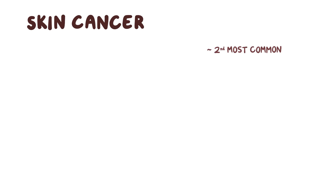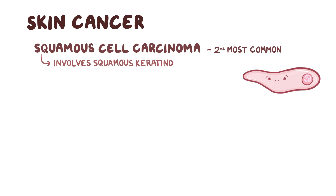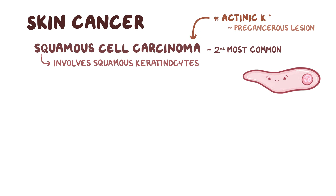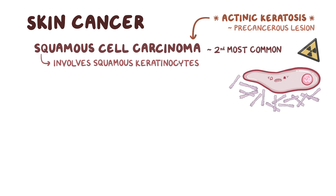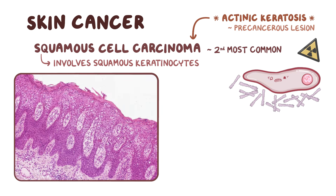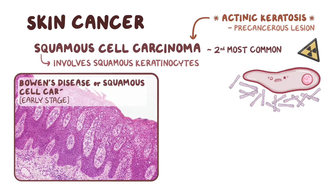The second most common type of skin cancer is squamous cell carcinoma, which involves squamous keratinocytes. A precancerous lesion that can turn into squamous cell carcinoma is called actinic keratosis. In actinic keratosis, keratinocytes are damaged by radiation and begin to overproduce keratin. Over time, these damaged keratinocytes can develop into squamous cell carcinoma. An early stage of squamous cell carcinoma is also called Bowen's disease, or squamous cell carcinoma in situ.